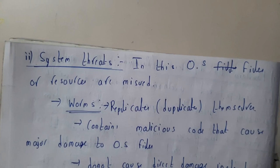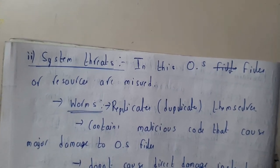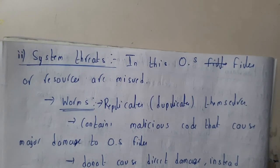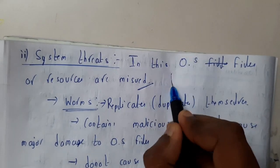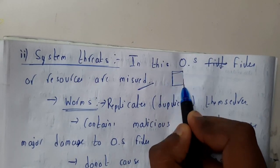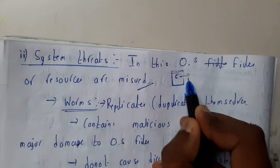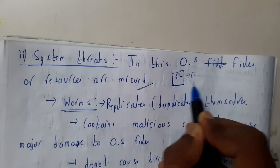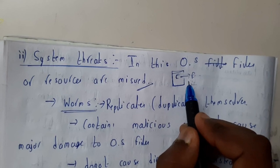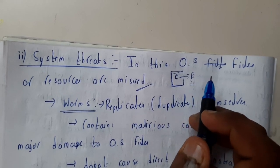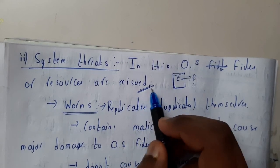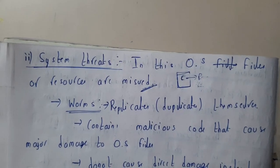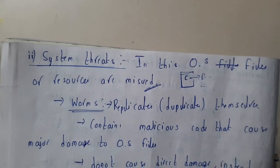Similarly, we have system threats, which are very popular nowadays — what we call viruses and worms. In system threats, OS files or resources are misused. When we install an operating system in the C drive, there are many hidden and restricted folders and files. Hackers use viruses and worms to get into our systems.